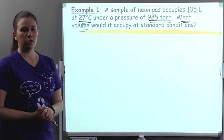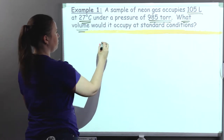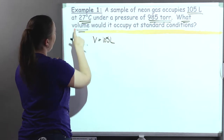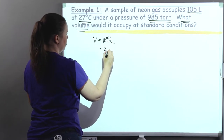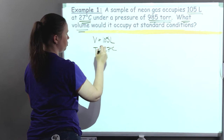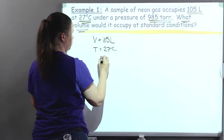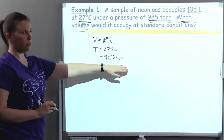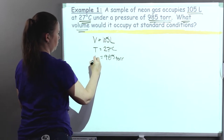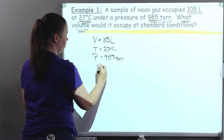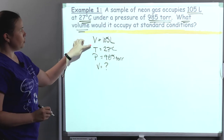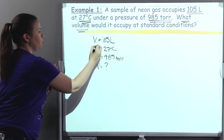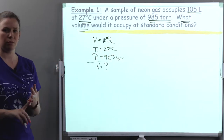It would occupy at standard conditions, and I have run out of numbers. So let's start our list: 105 liters measures volume; 27 degrees Celsius measures temperature; 985 torr is the pressure. These first three are in the same sentence — we've got 105 liters at this temperature under this pressure. So that is one whole set. That's my initial volume, temperature, and pressure.